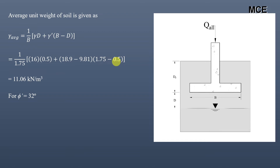For an effective friction angle of 32 degrees, the bearing capacity factors are: Nc = 44.04, Nq = 28.52, and Nγ = 26.87.